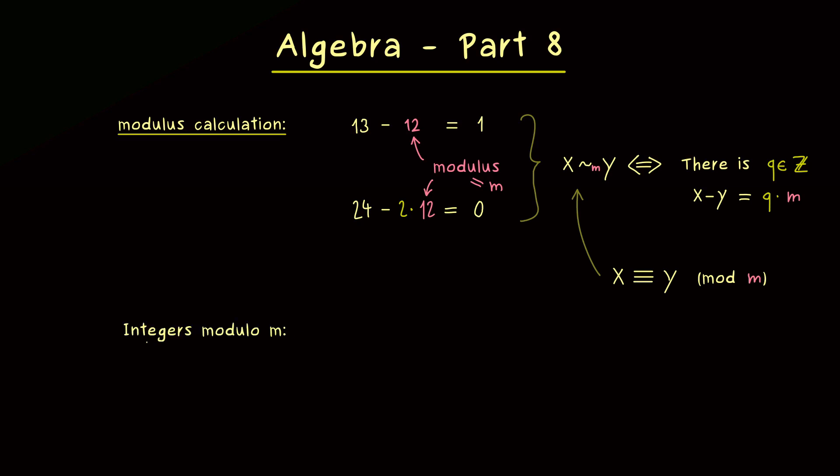With that in mind, now we are able to define the integers modulo m. There one finds different notations: for example, Z with index m. However, a more common notation might be Z divided by m times Z. And to shorten that, one also writes Z divided by m. They all mean the same thing, namely the set of equivalence classes given by the equivalence relation here. Therefore, we could also write Z modulo this equivalence relation. However, this is not so common, and I will stay with the shortest notation here. Moreover, later we can also explain the actual meaning of this notation here.